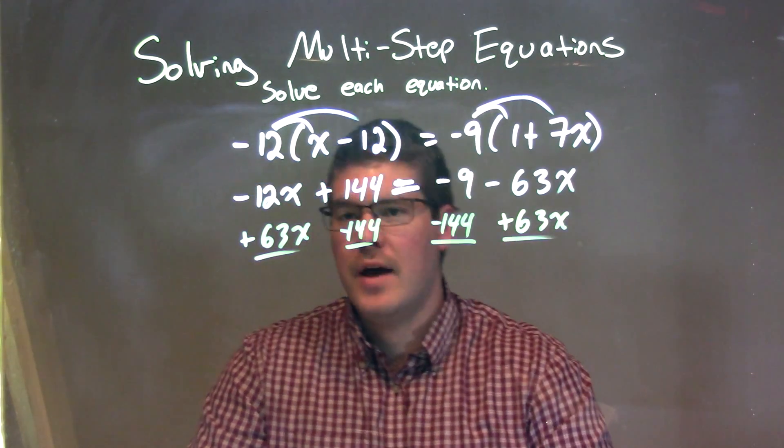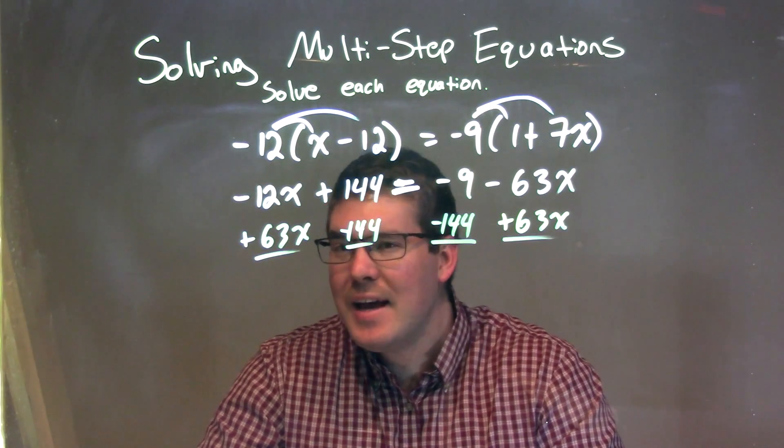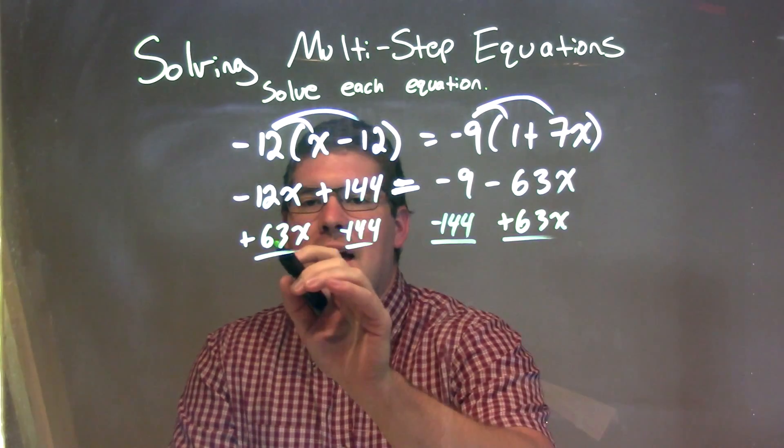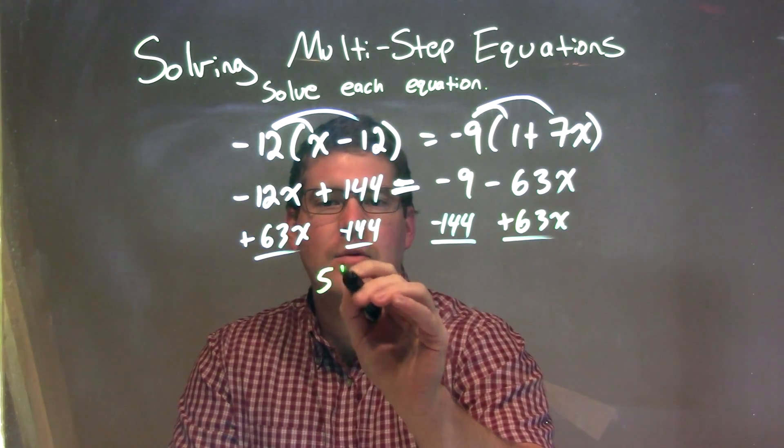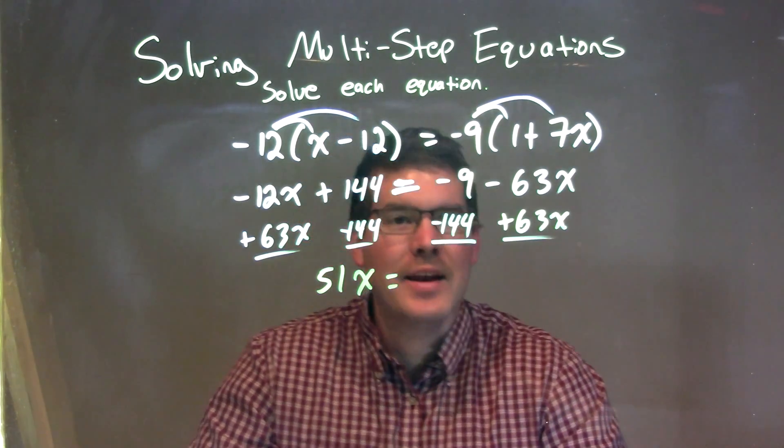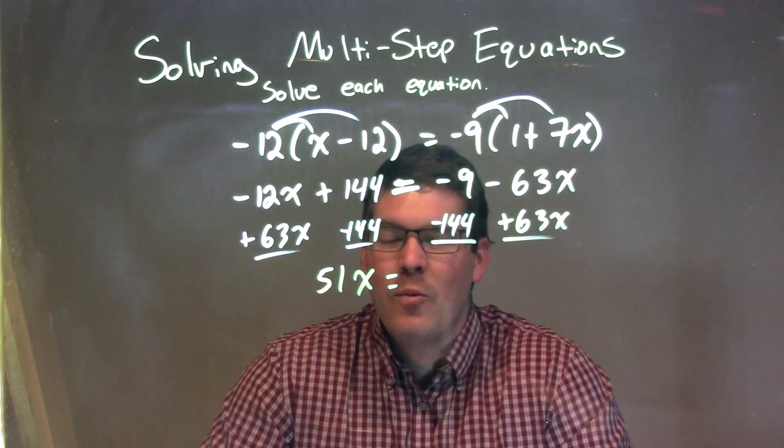That leaves me with negative 12x plus 63x, which really comes out to be 51x. So, 51x right there, and then negative 9 minus 144.